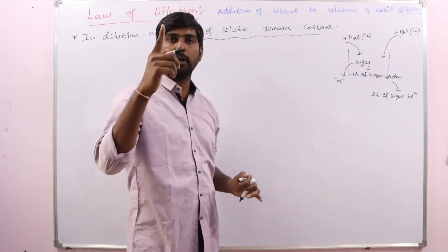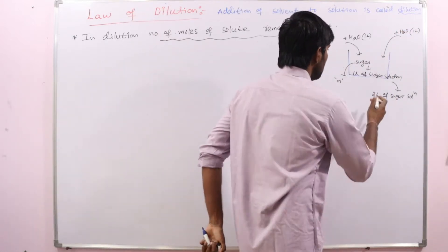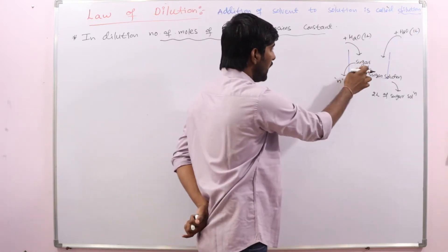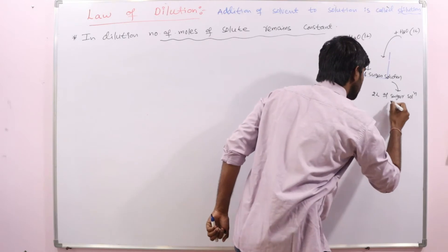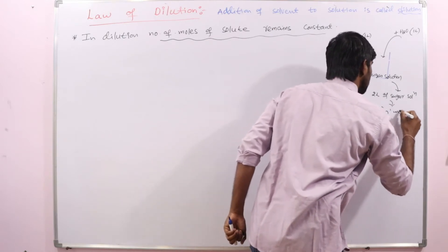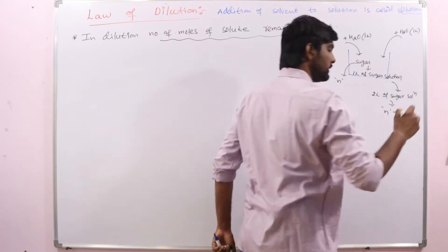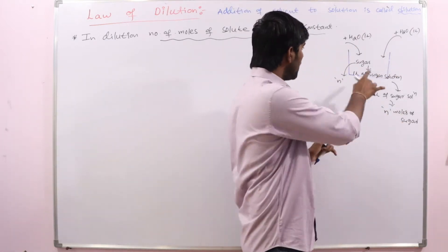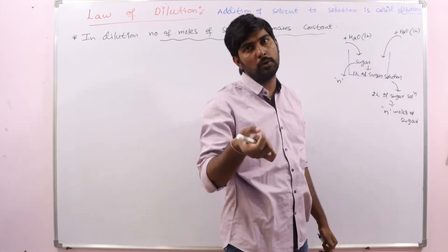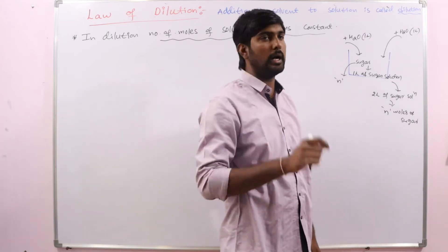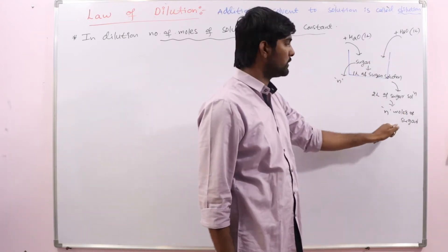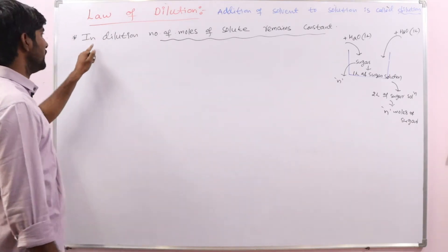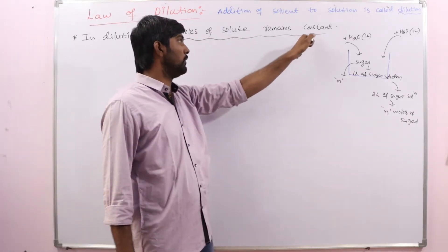For the 1 litre of sugar solution, we are adding 1 more litre of solvent. We are just adding solvent — we are not adding sugar. So in 1 litre of solution we have n moles of sugar, and in the 2 litre solution also we have n moles of sugar. So the number of moles of solute is constant. Before dilution and after dilution, the same moles of solute will be present. So in the dilution process, number of moles of solute remains constant.